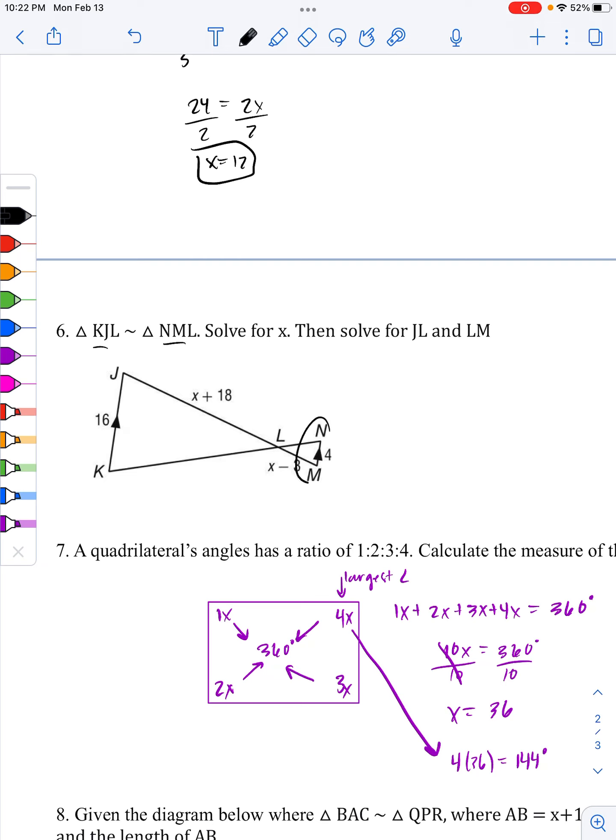Similarity statement here says that KJ, which is actually given, is corresponding to NM. So from left to right, I'm going to write that ratio, 16 over 4. That is going to simplify in a second. Let me finish this proportion.